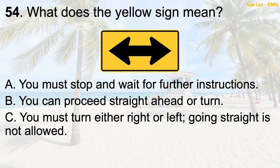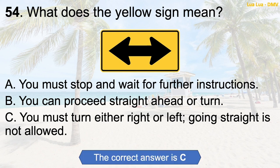Question 54: What does the yellow sign mean? A. You must stop and wait for further instructions. B. You can proceed straight ahead or turn. C. You must turn either right or left — going straight is not allowed. The correct answer is C: You must turn either right or left, going straight is not allowed.